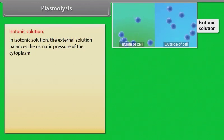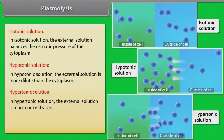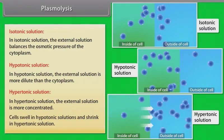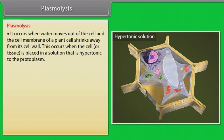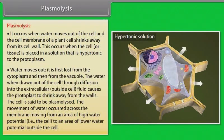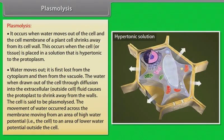The behaviour of plant cells or tissues with regard to water movement depends on the surrounding solution. If the external solution balances the osmotic pressure of the cytoplasm, it is said to be isotonic. If the external solution is more dilute than the cytoplasm, it is hypotonic. And if the external solution is more concentrated, it is hypertonic. Cells swell in hypotonic solution and shrink in hypertonic ones. Plasmolysis occurs when water moves out of the cell and the cell membrane shrinks away from its cell wall. This occurs when the cell is placed in a solution hypertonic to the protoplasm. Water is first lost from the cytoplasm and then from the vacuole, causing the protoplast to shrink away from the walls — the cell is said to be plasmolyzed. Water movement occurs across the membrane from an area of high water potential to an area of low water potential outside the cell.